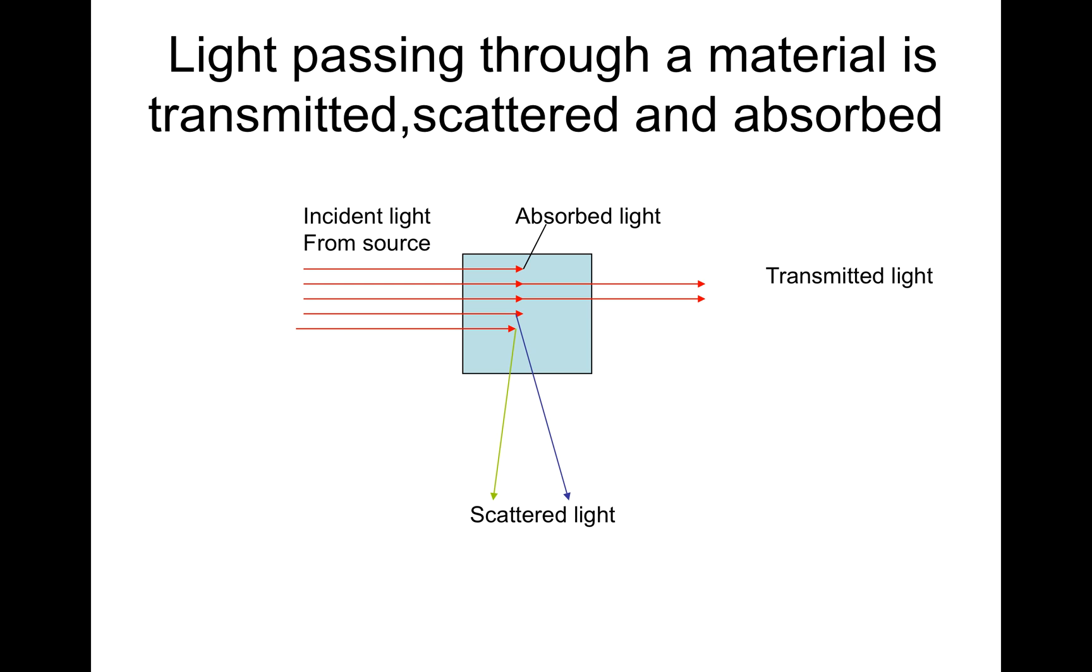Light passing through a material is transmitted, scattered, and absorbed. As in here, the incident radiation enters the material, some is absorbed, some is transmitted through, and some is scattered.